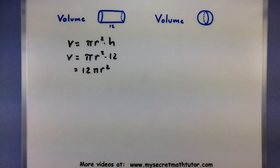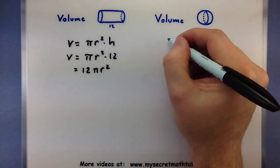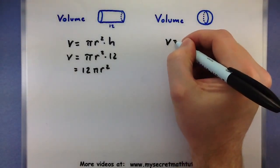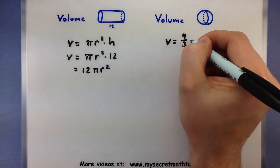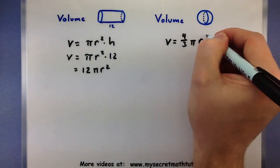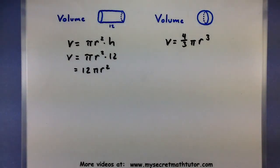For the sphere, when you put them both together, you have one whole sphere. So the volume for a sphere is 4 thirds pi r cubed.